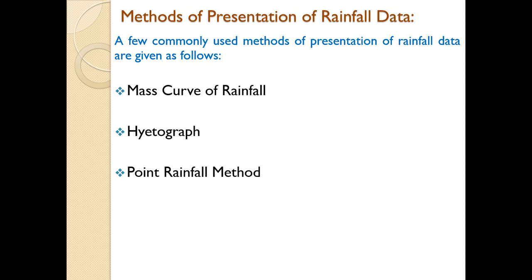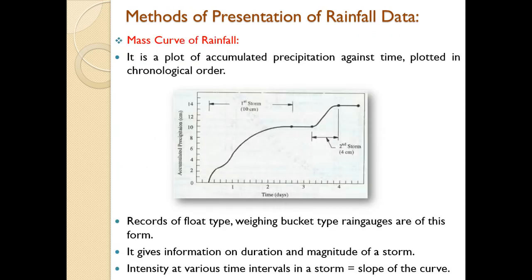Now coming to methods of presentation of rainfall data — how the rainfall data is presented. A few commonly used methods are: mass curve of rainfall, hydrograph method, and point rainfall method. The mass curve of rainfall is a plot of accumulated precipitation against time plotted in chronological order. Records of float type and weighing bucket type rain gauges are of this form. It gives information on the duration and magnitude of a storm, as well as intensity at various time intervals using the slope of the curve.